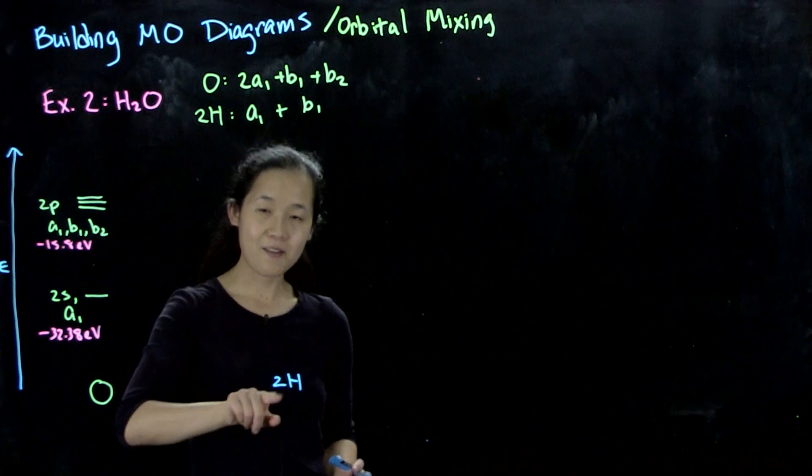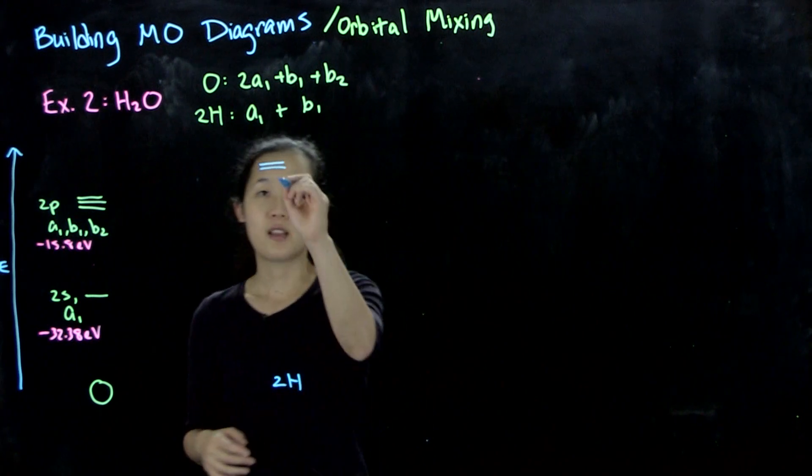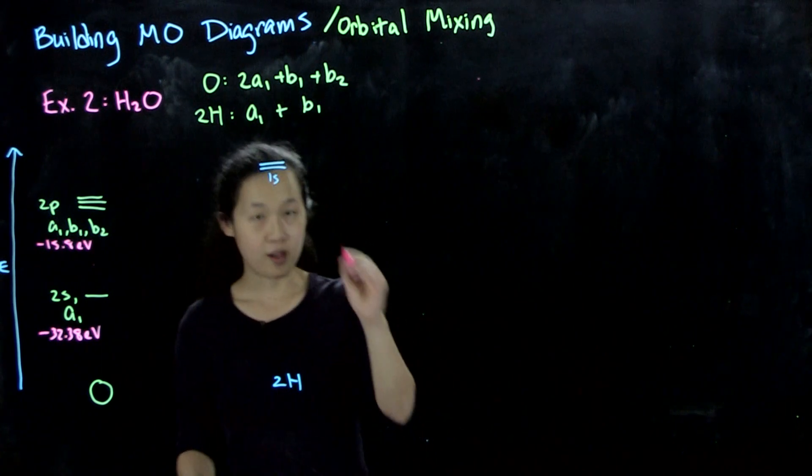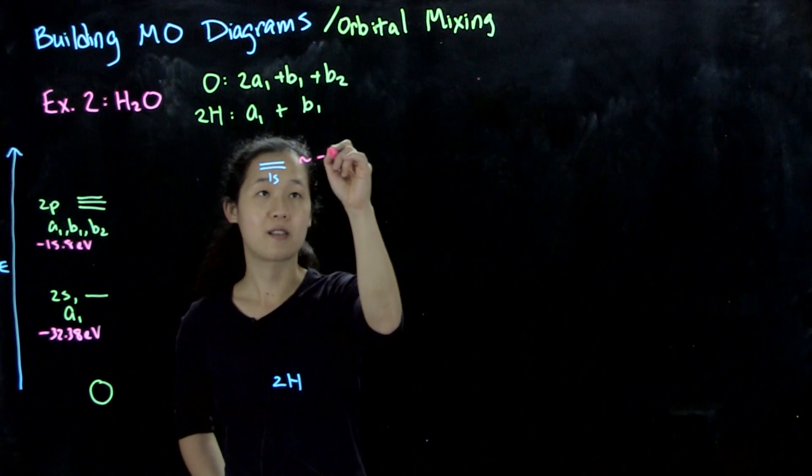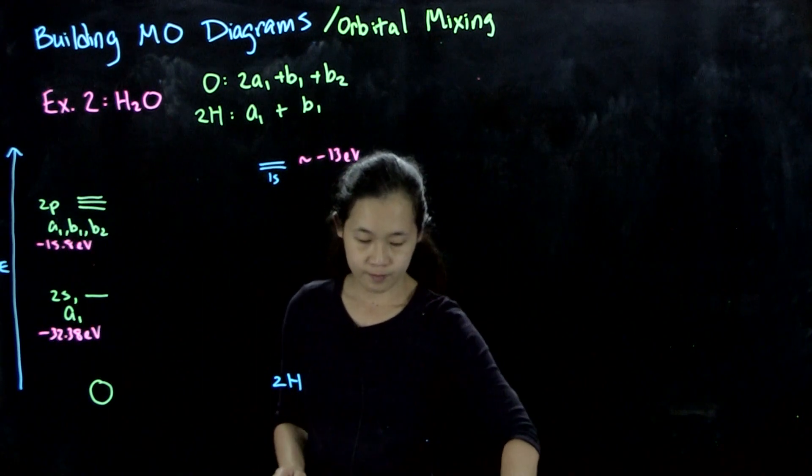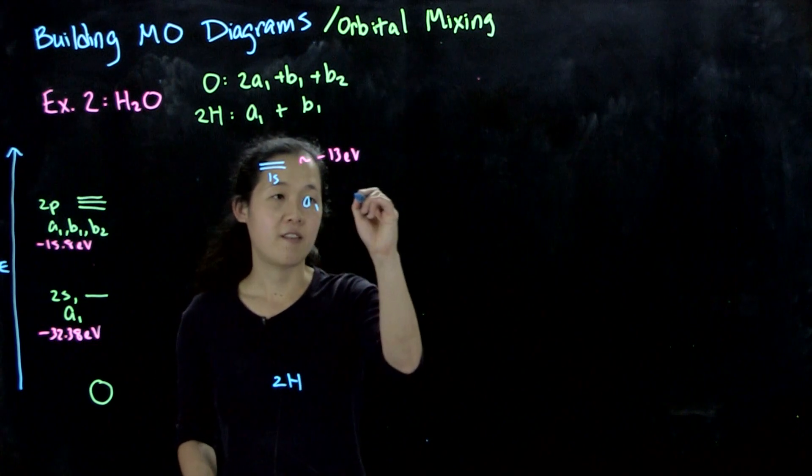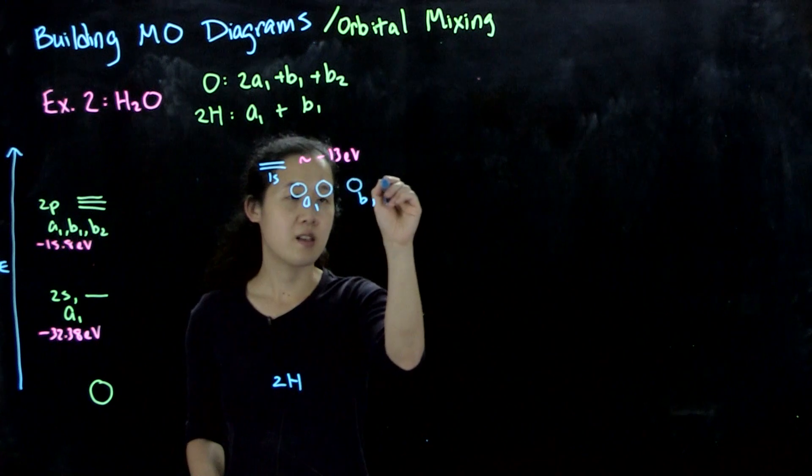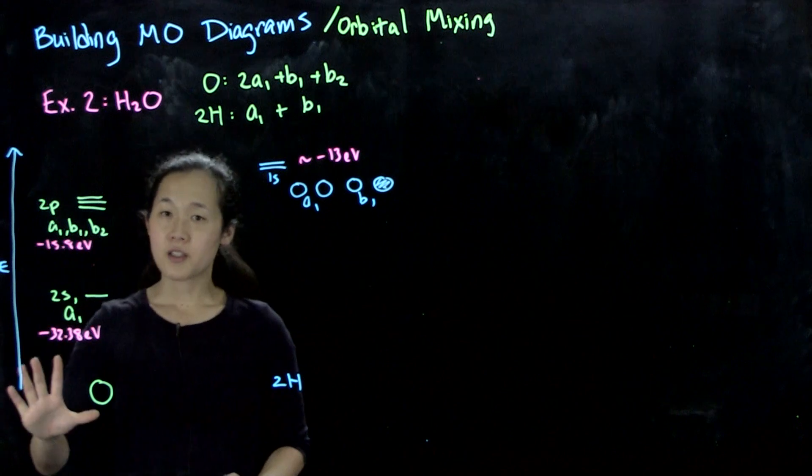The hydrogen 1s orbitals - we have two of them that are degenerate because they're two hydrogen atoms. This energy in the table was about minus 13 eV, slightly above the energies of our 2p orbitals on oxygen. Keep in mind we have our a1 and b1 SALCs. a1 looks like this, and b1 looks like this. I'm not going to draw the atomic orbitals of oxygen - you already know what those look like.